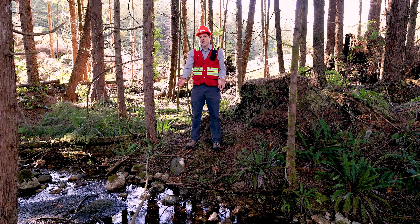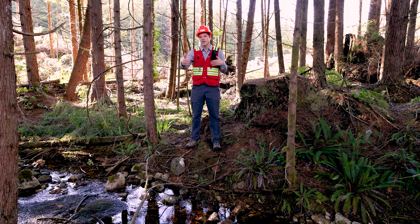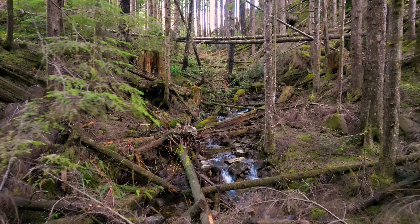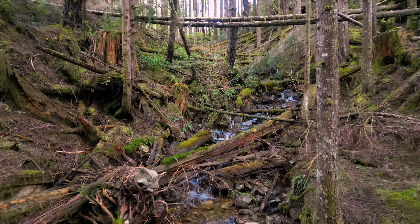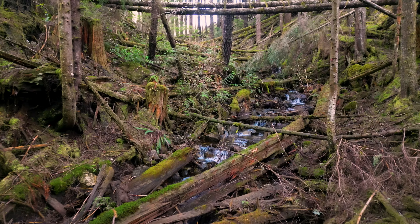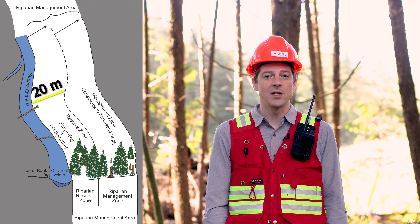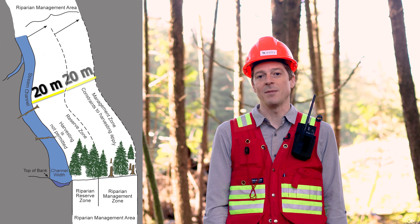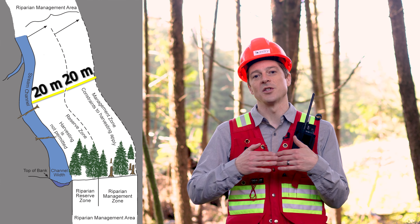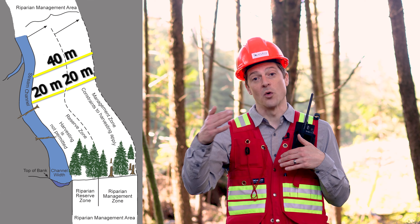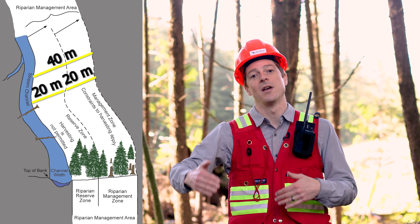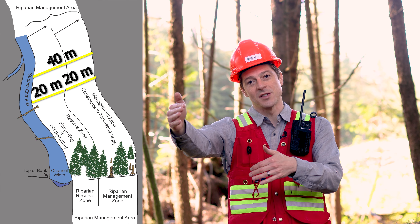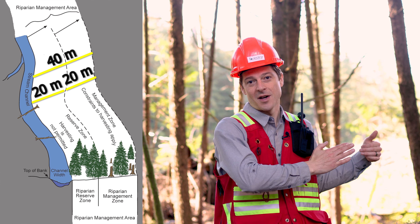This stream, for example, is a fish-bearing stream and the channel width is between one and a half and five meters, so that makes this a class S3 stream. Looking up the regulations for the riparian management area, it says that we need to have a 20-meter reserve zone and a 20-meter management zone, for a total riparian management area of 40 meters. Those distances refer to one side of the stream, so we need to have 40 meters on one side and 40 meters on the other.